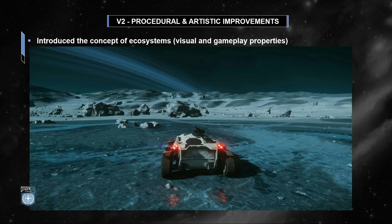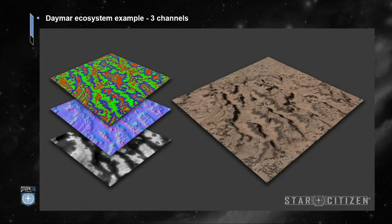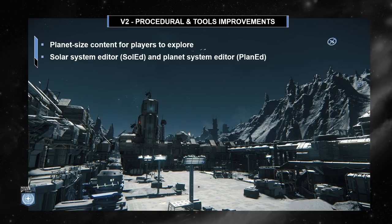The ecosystems are a combination of terrain maps with visual objects and gameplay properties. Each ecosystem had a three-channel color texture used for blending texture layers, and we used the same channels for object scattering as well. Using ecosystems, we could make each planet unique, matching the lore, but still generating planet-sized content for players to explore.